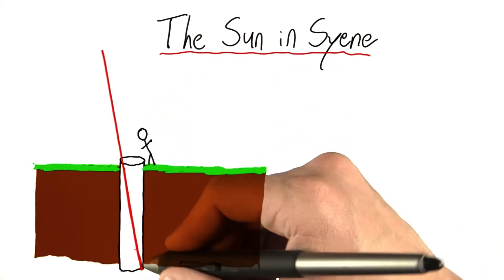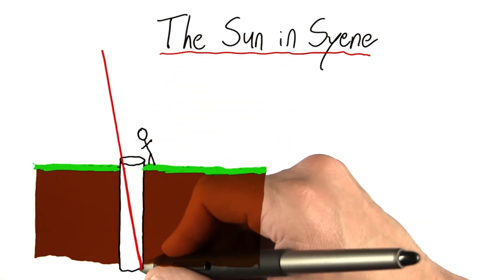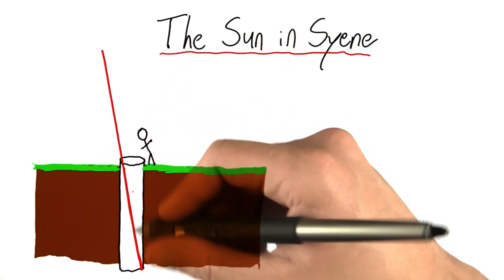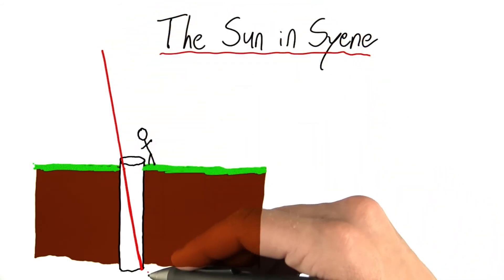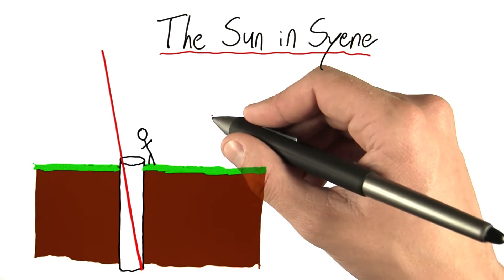And that would be this ray. If we tried to make this angle any steeper, it wouldn't actually hit the bottom of the well. It would hit somewhere along the wall. So how can we calculate this angle? Well, let's make some assumptions about the depth of the well and the width of the well that Eratosthenes was looking at.